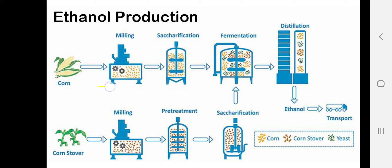Ethanol production using maize (corn) is also shown. When corn is used, the grains or cob are subjected to milling, then saccharification, followed by fermentation, and finally distillation to obtain ethanol. Apart from the maize grains or cob, the remaining plant biomass — called corn stover — is also subjected to milling, then pre-treatment because it contains a lot of lignocellulosic material, followed by saccharification and distillation to obtain ethanol.